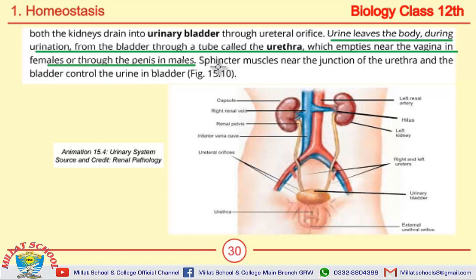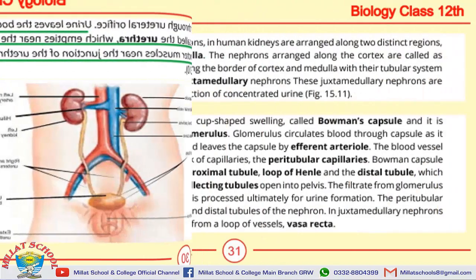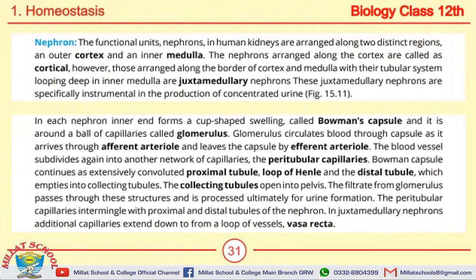Sphincter muscles near the junction of the urethra and the bladder control the urine in the bladder. These muscles are located at the junction where the urethra and bladder meet, and their function is to control urine retention in the bladder.